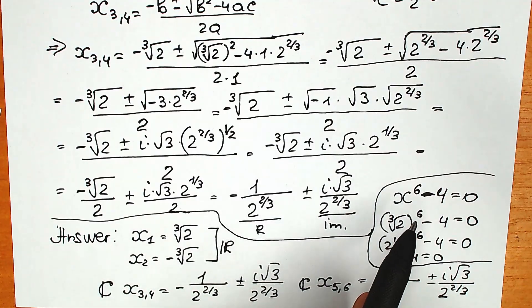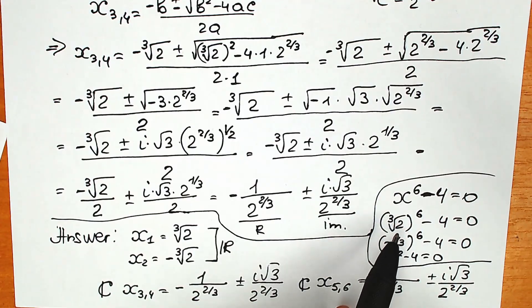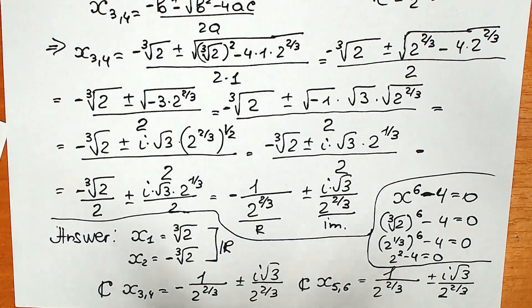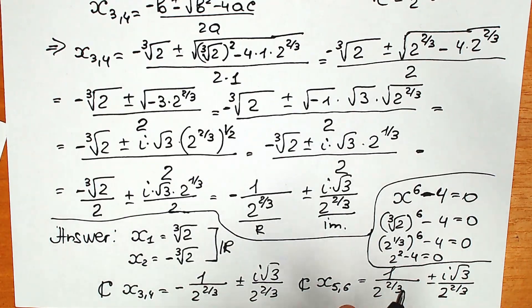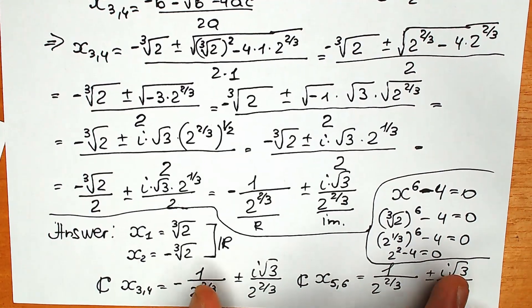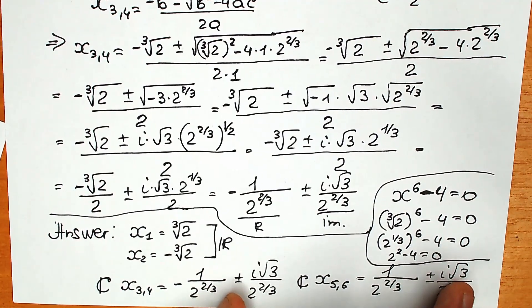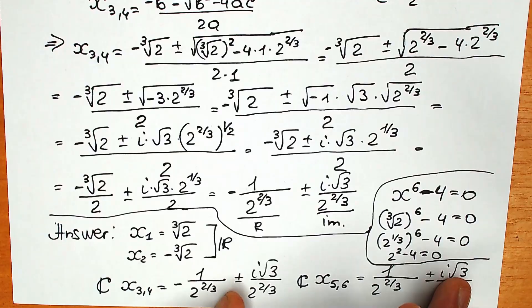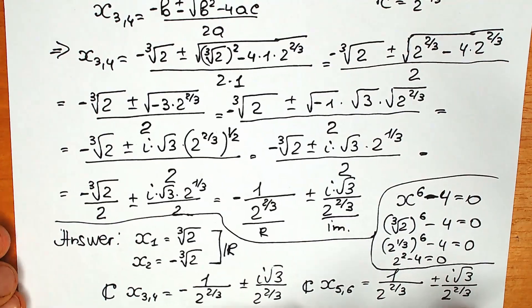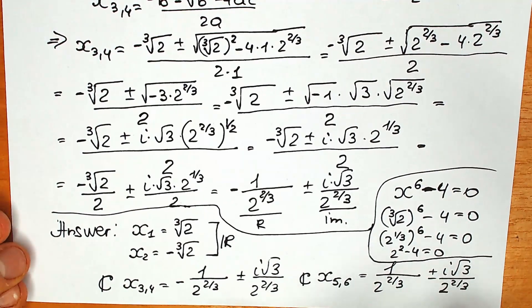That was my explanation for this question. I really hope you understand it and see why we have six roots overall — two real and four complex. Write your thoughts in the comment section. Thank you for watching, for your likes and support. Wishing you all the best, take care of yourself, and see you in the next video.